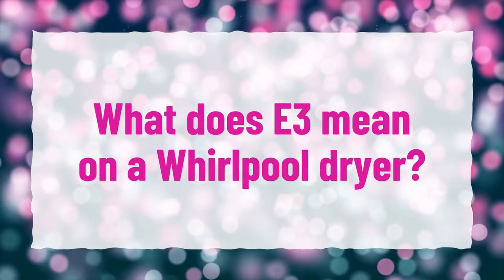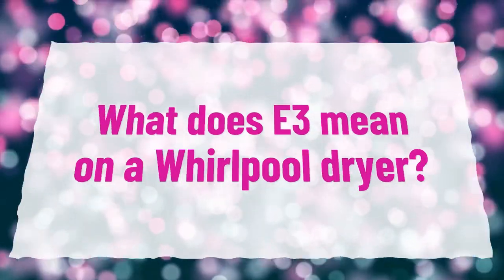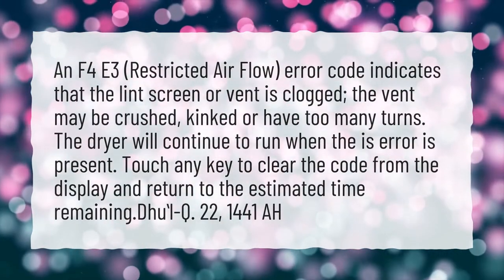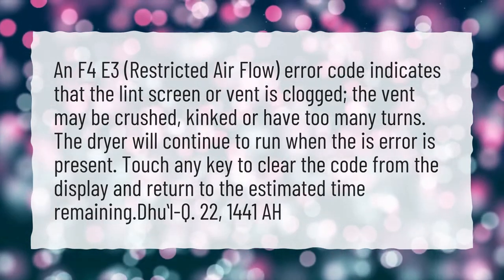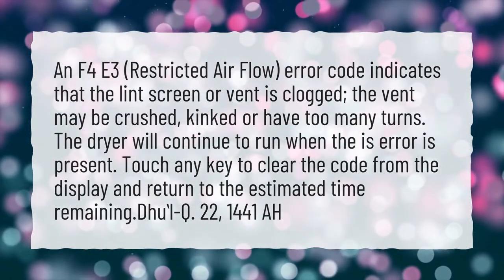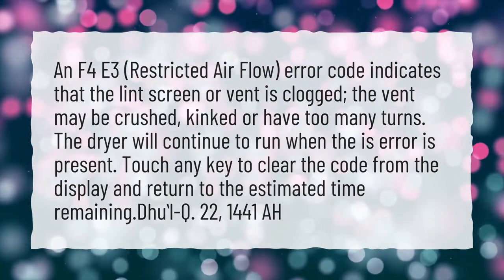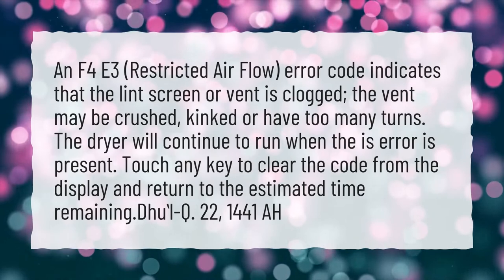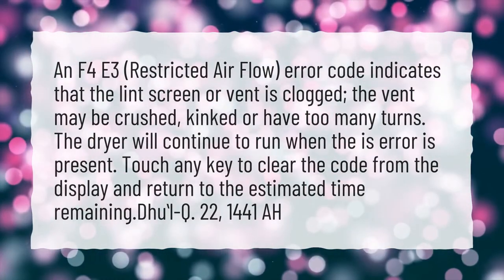What does E3 mean on a Whirlpool dryer? An F4 E3 restricted airflow error code indicates that the lint screen or vent is clogged. The vent may be crushed, kinked, or have too many turns. The dryer will continue to run when this error is present. Touch any key to clear the code from the display and return to the estimated time remaining.